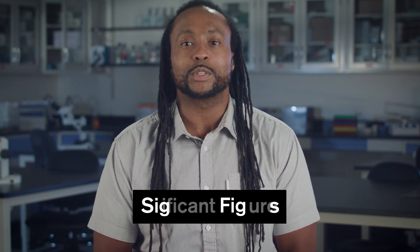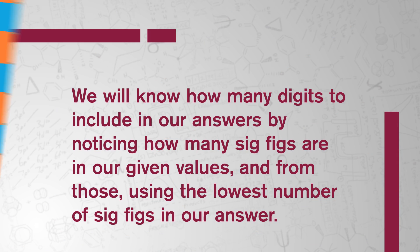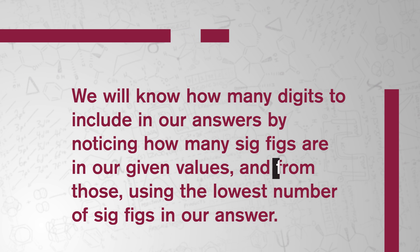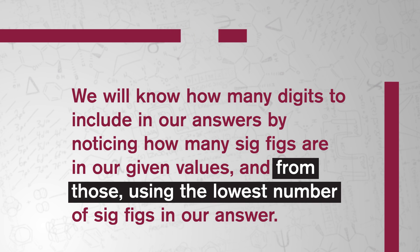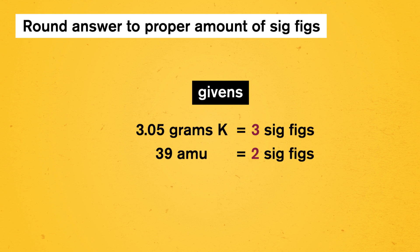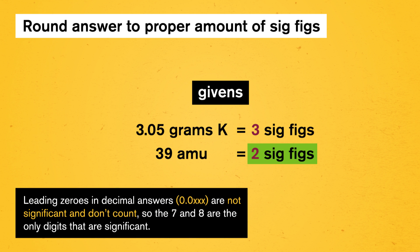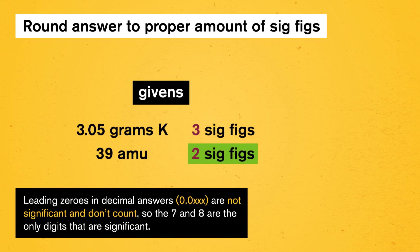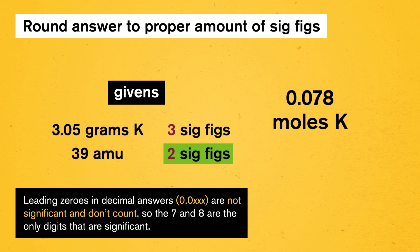We also need to round our answers to the proper number of significant figures, or sig figs. This helps scientists know how accurate our measurements and calculations are. We determine how many digits to include by noticing how many sig figs are in our given values and using the lowest number. Our givens were 3.05 grams, which has 3 sig figs, and 39 AMU, which has 2. We round our final answer to 2 sig figs. Since leading zeros are not significant, our answer is 0.078, with just the 7 and 8 counting toward our total of 2 sig figs.